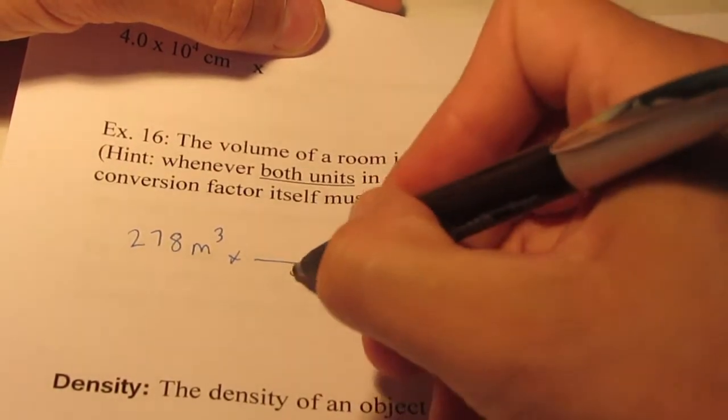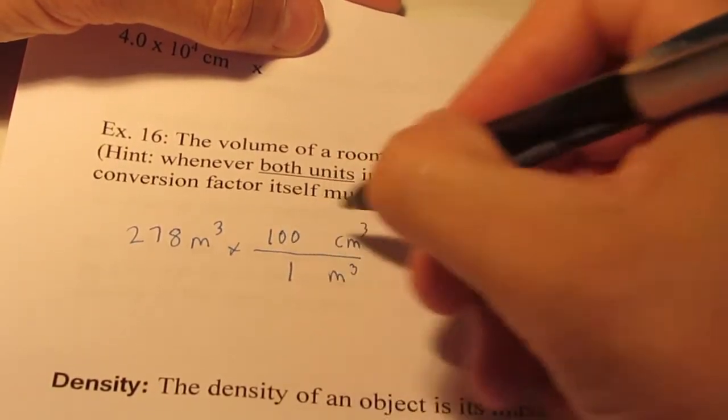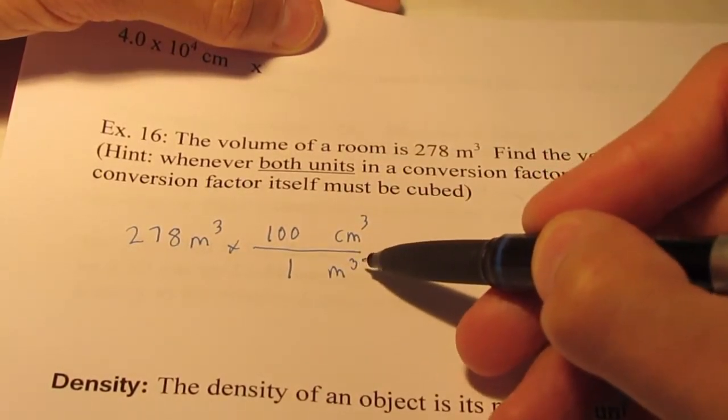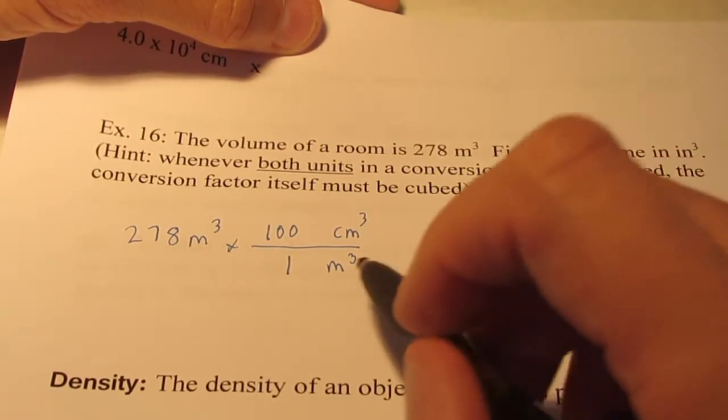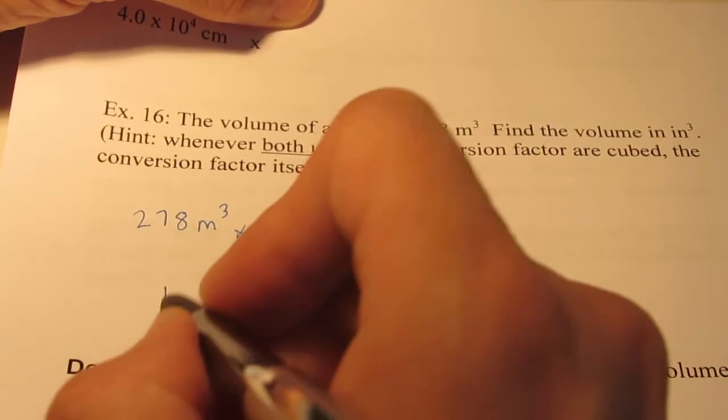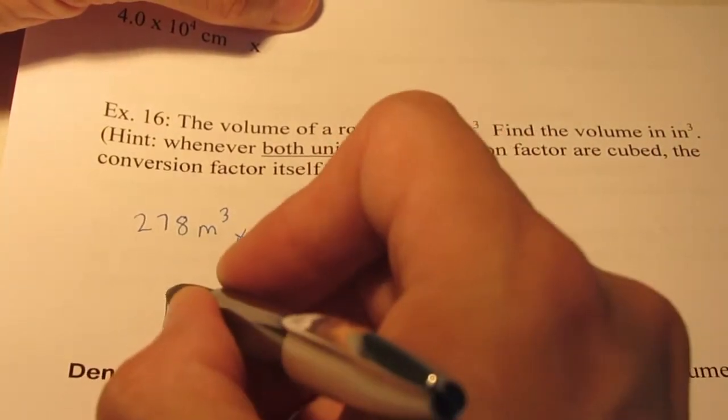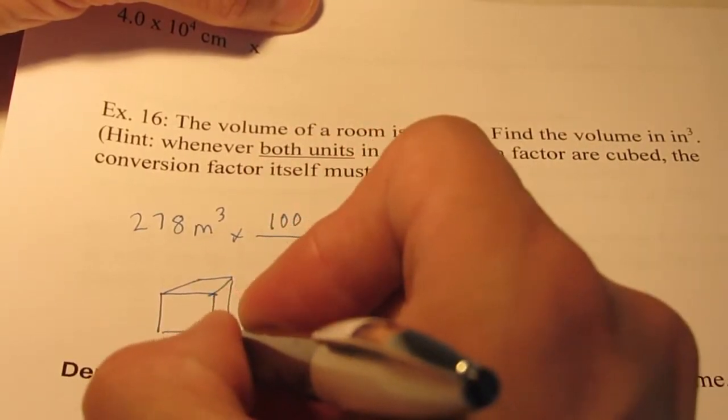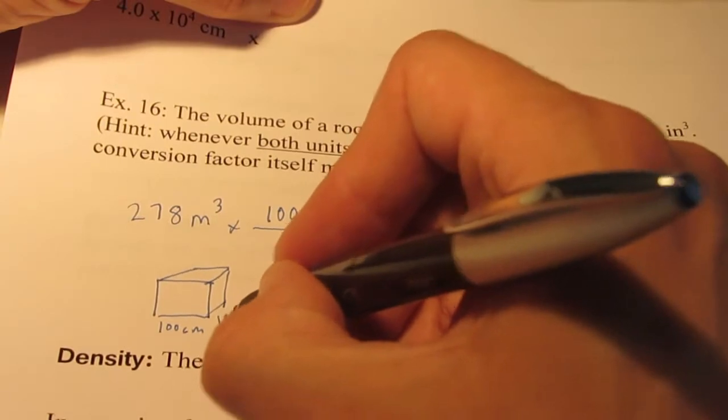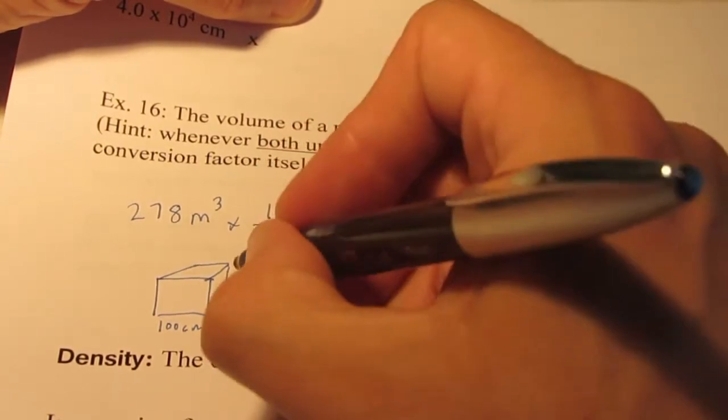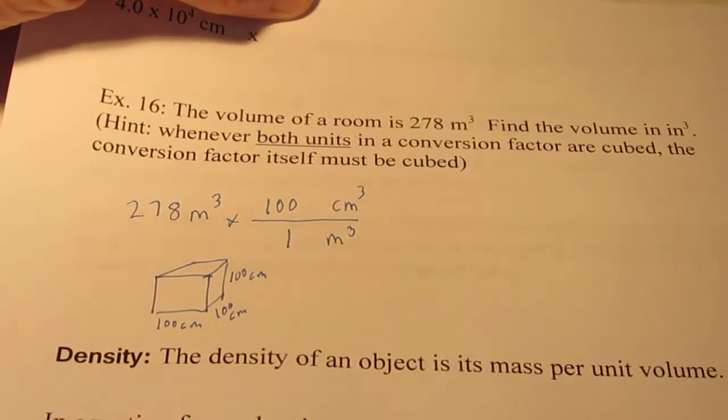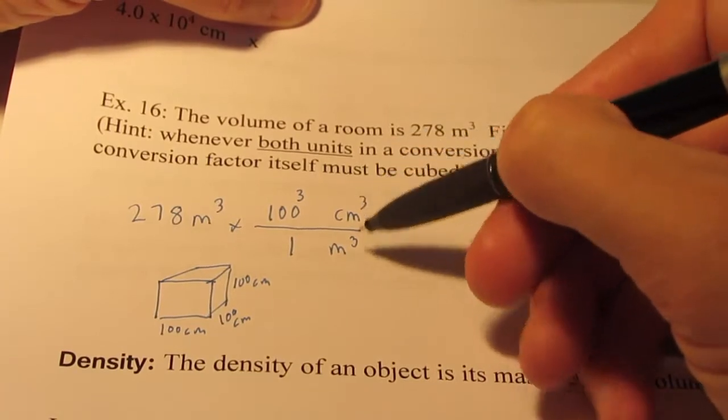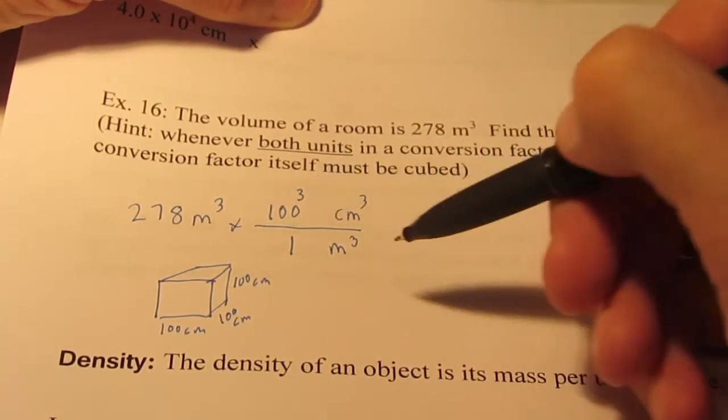In one meter, there are 100 centimeters. But these units are cubed, so that means we cube the conversion factor. So we have 100 times 100 times 100. That's why we cube the conversion factor. So whenever both units are cubed, we cube the conversion factor.